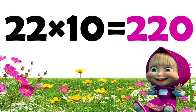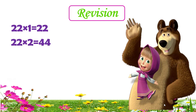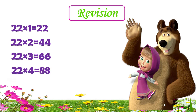22 tens are 220. Now let's quickly revise the table: 22 ones are 22, 22 twos are 44, 22 threes are 66, 22 fours are 88.